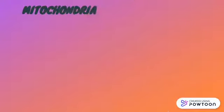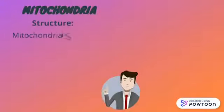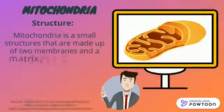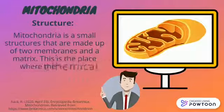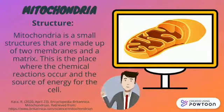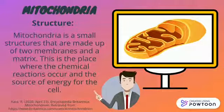Mitochondria are small structures made up of two membranes and a matrix. This is the place where chemical reactions occur and it is the source of energy for the cell.